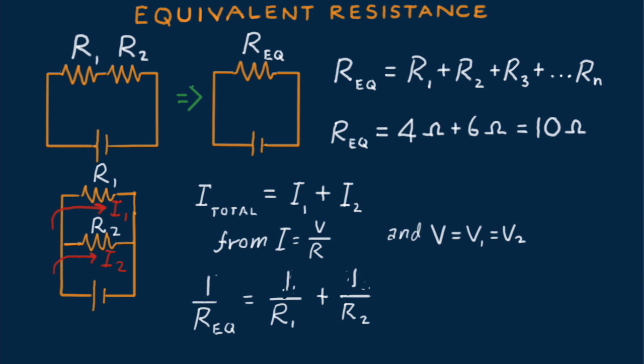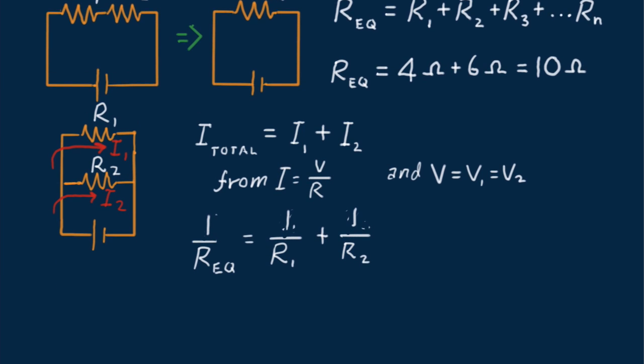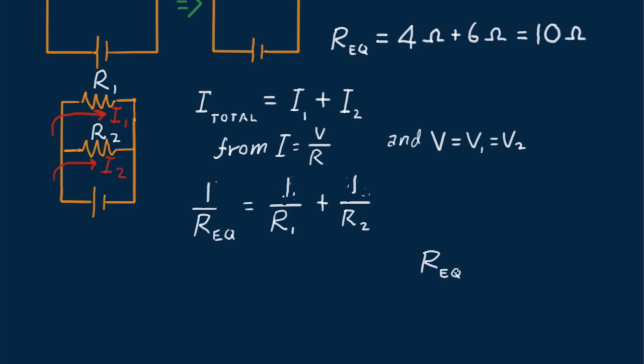So the reciprocal of the equivalent resistance equals the sum of the reciprocals of the two single resistors. With a bit of algebra, we can convert this equation to the product of the resistors divided by their sum. This is the product over sum rule for a pair of resistors in a parallel circuit.